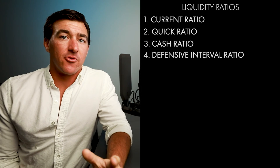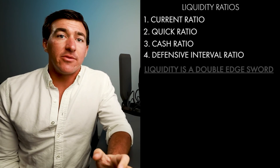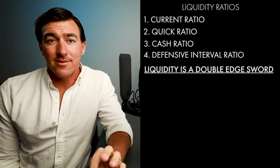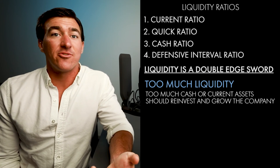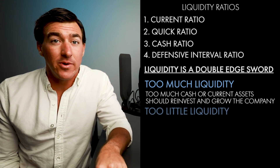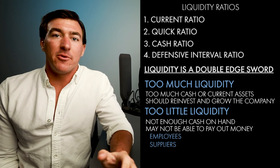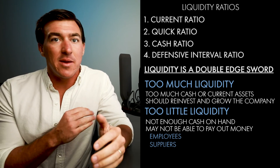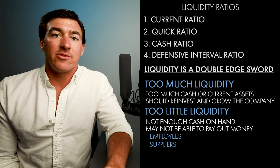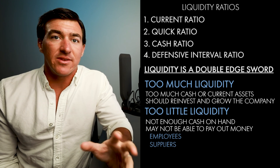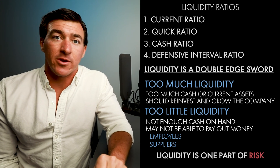Those four ratios are the key ideas for liquidity analysis you'll use when analyzing a financial statement or company. Liquidity is a double-edged sword: too much liquidity means too much cash or current assets on hand that should be reinvested to grow the company further. Too little liquidity means you may not be able to pay employees and suppliers. Finding that sweet spot — enough liquidity to pay everybody for the foreseeable future without hoarding money instead of reinvesting it — is up to the analyst and investor. Liquidity is just one part of analyzing company risk; the other part is solvency, which we'll dive into next.